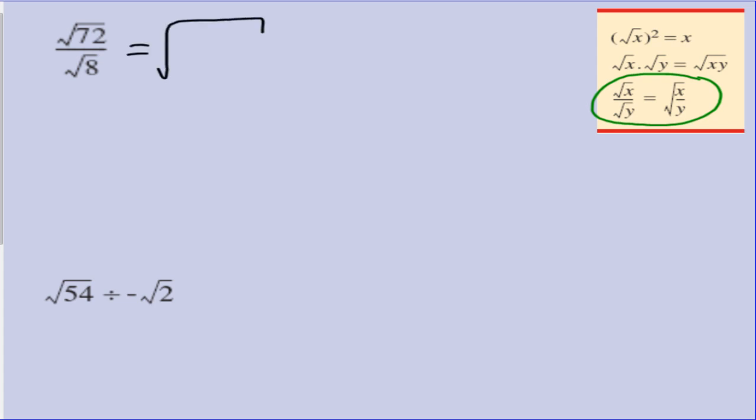We're going to join it together in one big surd, and have it as the square root of 72 divided by 8. So our square root sign remains there. 72 divided by 8 gives us 9. That is no longer a surd. We can simplify that to be just a 3.